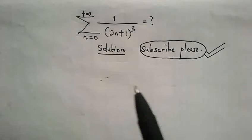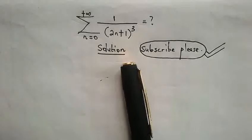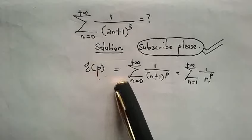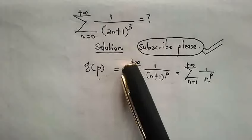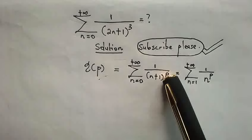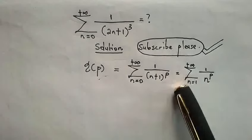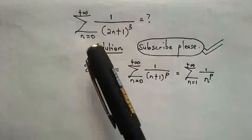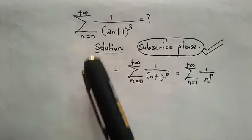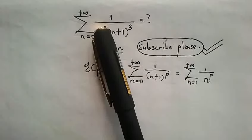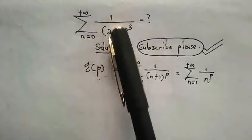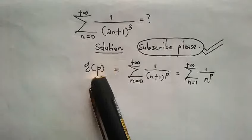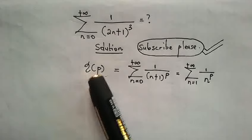Now let's see how to compute the exact value of this infinite advanced series. But before we do this, let us recall the Riemann zeta function. The Riemann zeta function of p is equal to the sum as n goes from 0 to infinity of 1 over (n+1)^p, also equal to the sum as n goes from 1 to positive infinity of 1 over n^p. We can make use of this Riemann zeta function in this problem, but first we need to manipulate the fraction 1 over (2n+1)^3.